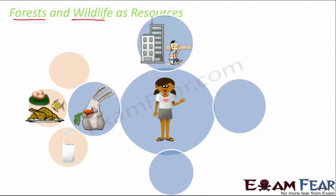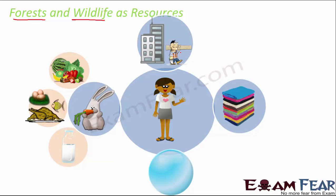Food items like eggs, meat, and fish are obtained from animals. Vegetables, fruits, and seeds are all plant products. So the food items we eat are obtained either from plants or animals, directly or indirectly. Forests and wildlife are resources because they give us food and raw materials for construction. They also give us water, which is important for survival.